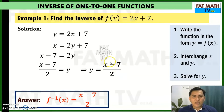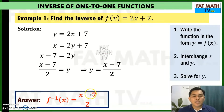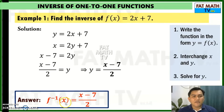So x minus 7 over 2 is the inverse of the given function f of x equals 2x plus 7. We write and read this as f inverse of x equals x minus 7 over 2.